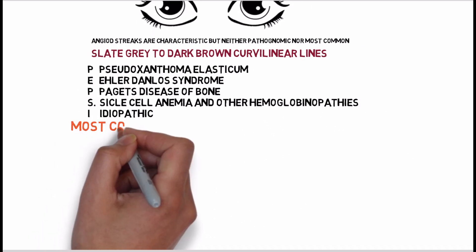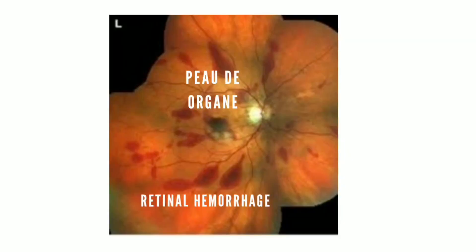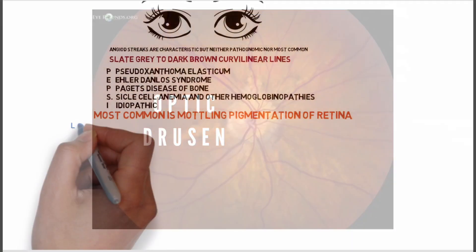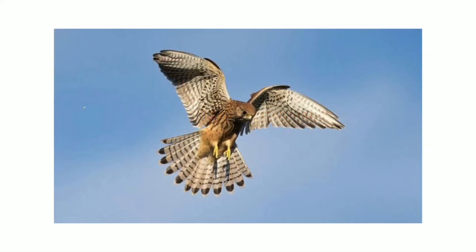The most common eye finding is mottled pigmentation of the retina, also called 'peau d'orange' appearance, which represents a transition between calcified and non-calcified Bruch's membrane. Less commonly, macular degeneration, optic drusen, and wing sign can also occur. Wing sign represents a pair of hyperpigmented symmetrical patches on either side of an angioid streak, like the wings of a hovering bird over prey — that is why it is called wing sign.